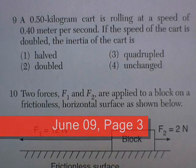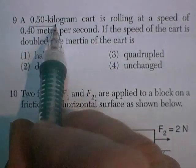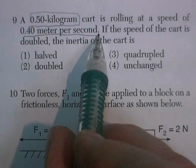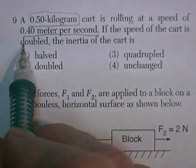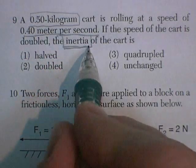We're on the June '09 exam, page 3, Question 9. A 0.50-kilogram cart is rolling at a speed of 0.40 meters per second. If the speed of the cart is doubled, the inertia of the cart... It's kind of a trick question.